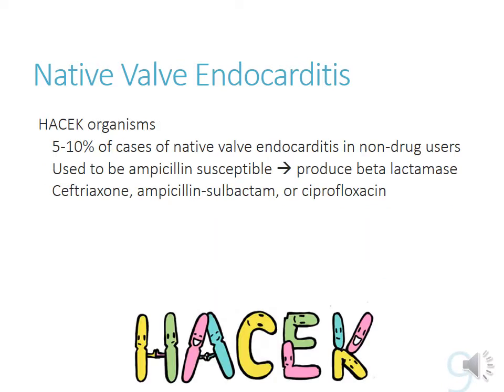For HACEK gram-negative organisms, they used to often be ampicillin-susceptible, but nowadays they're producing a lot of beta-lactamases. So you'll need to use something like ceftriaxone, ampicillin-sulbactam — sulbactam being a beta-lactamase inhibitor — or ciprofloxacin. If you were empirically treating with vancomycin for these gram-negatives, you wouldn't have been doing much good, but hopefully culture results back at 48 to 72 hours give you an idea of how to change therapy.